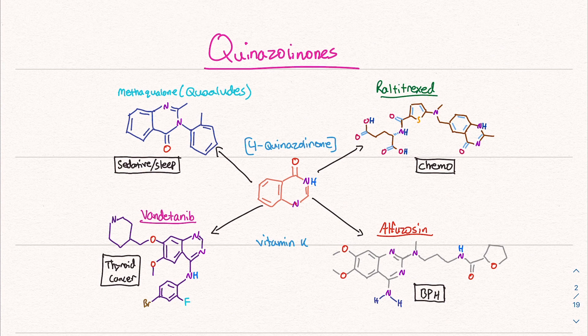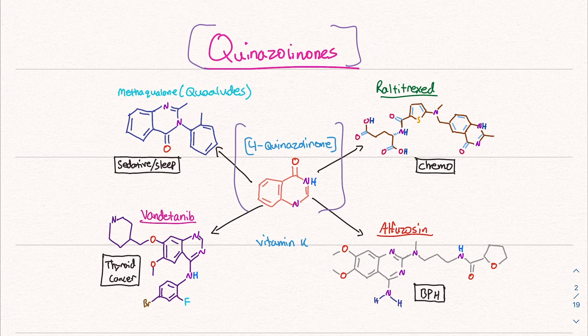The family that methoqualone belongs to is called the quinazolinones, specifically 4-quinazolinone. Now this one's really interesting. I'm going to post a paper from the Royal Society of Chemistry on quinazolinones. It's very complex. I would just suggest read some of it and look at the first couple pictures and you'll get a really cool idea of the diversity of these relatives.